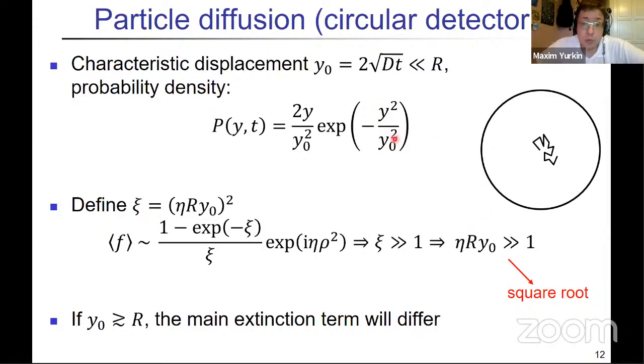Let us also include particle diffusion for a circular detector. We just consider some diffusion with the characteristic displacement y_0, which is based on diffusion coefficient and time of diffusion or time of measurement. We assume that it's smaller than the radius of the detector. Then you can do some math and obtain the following expression. If you want this averaged value of f—which is defined here with xi—to be small, then eta xi needs to be much larger than one, and that means that this value should also be much larger than one but as a square root. By contrast to the previous case, here to have one percent it's sufficient to have this number on the order of 10 or something, so not that large.